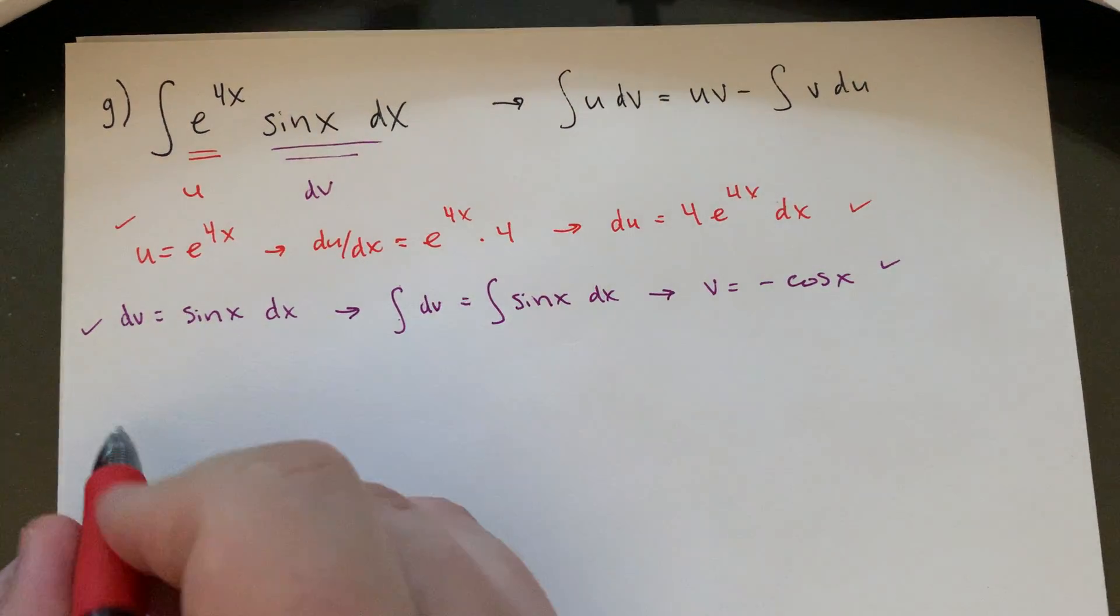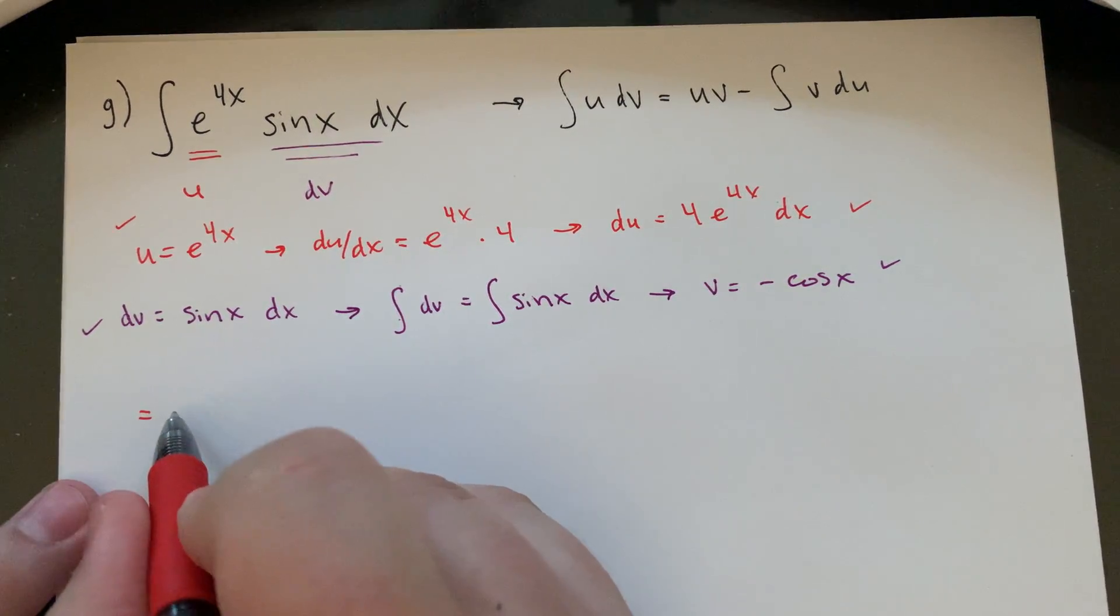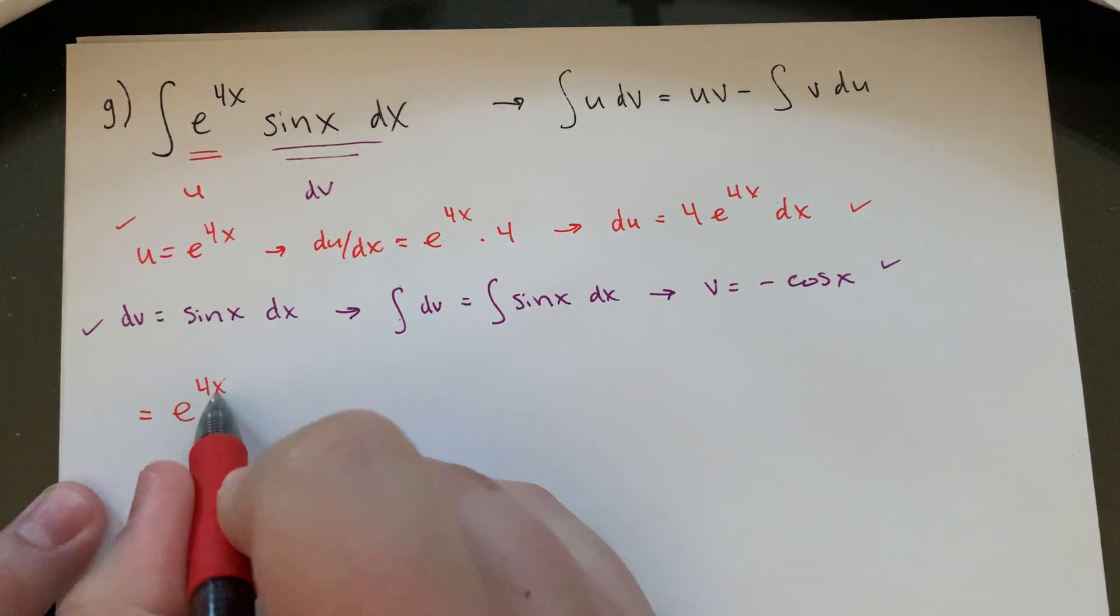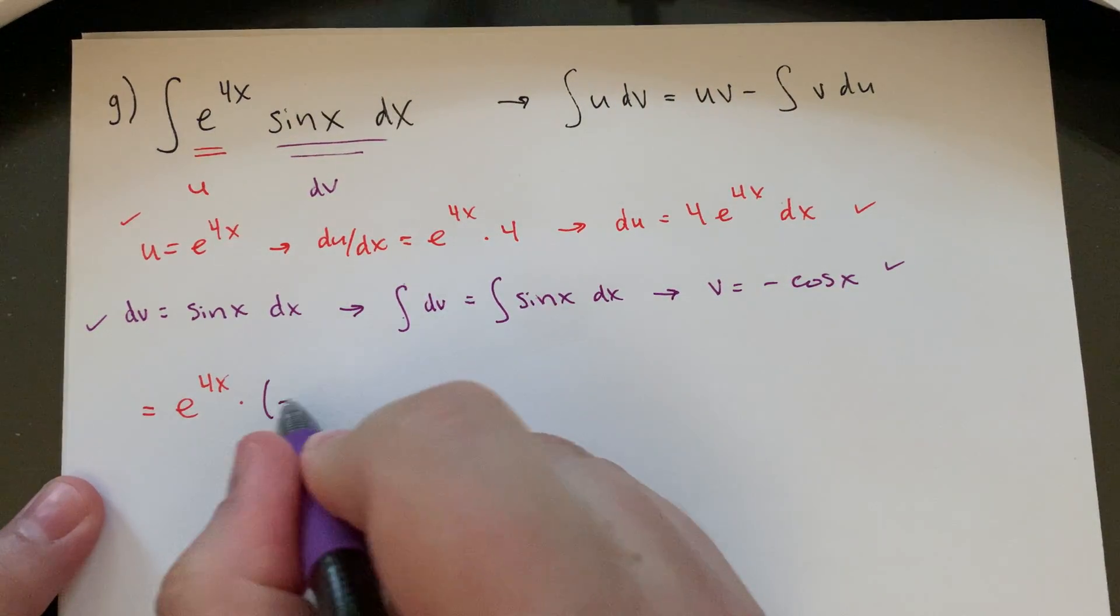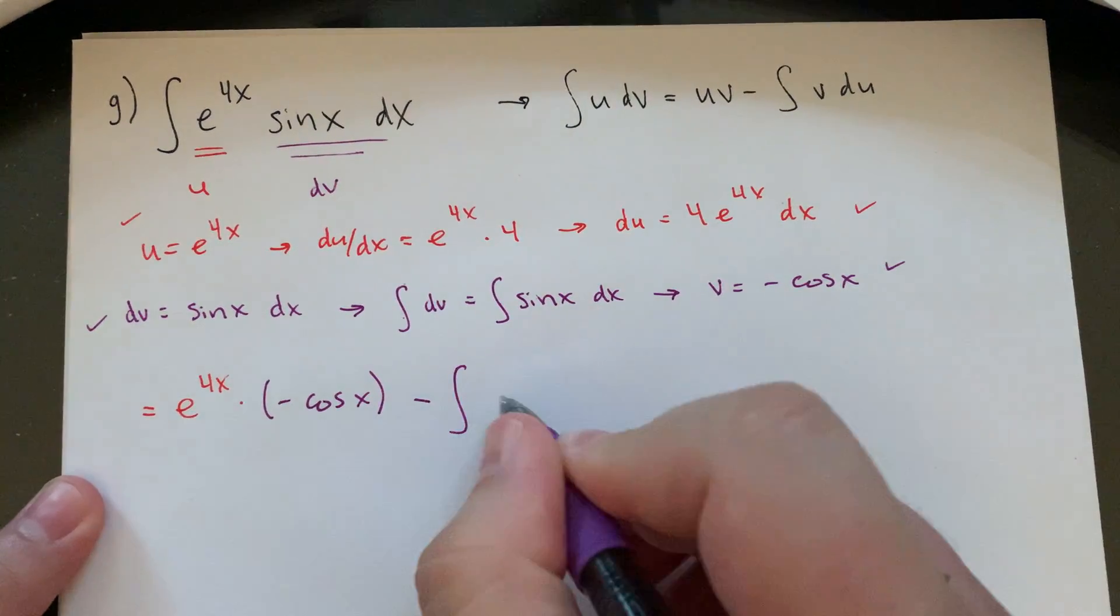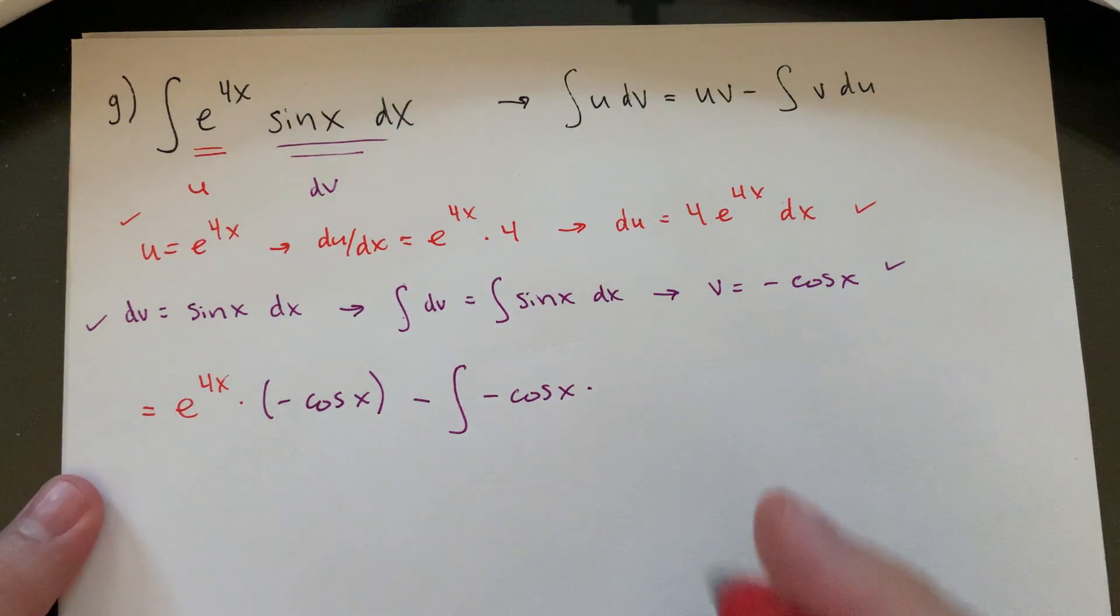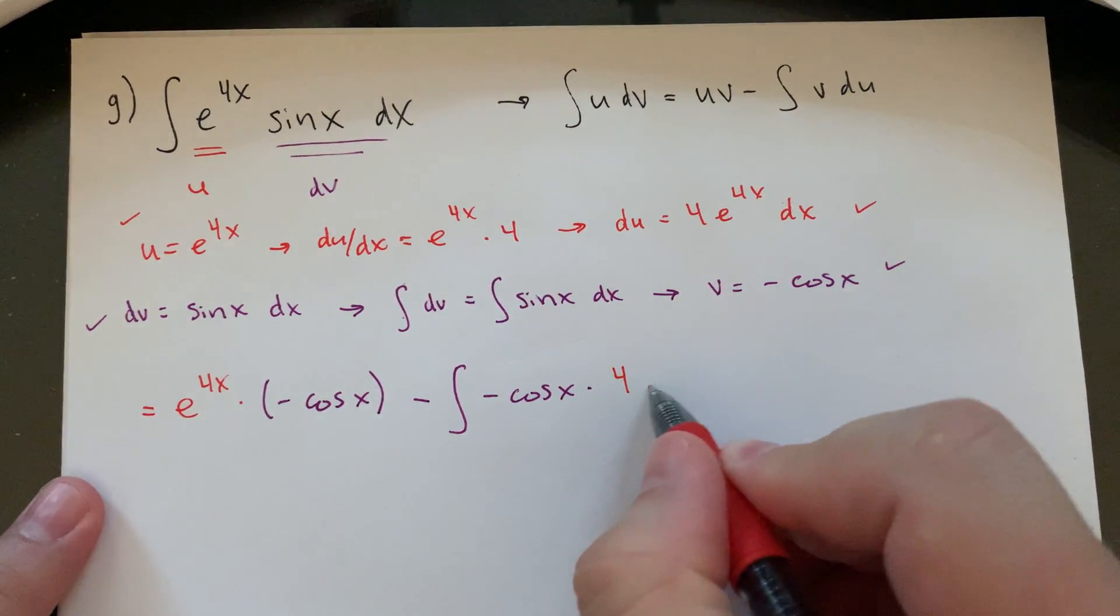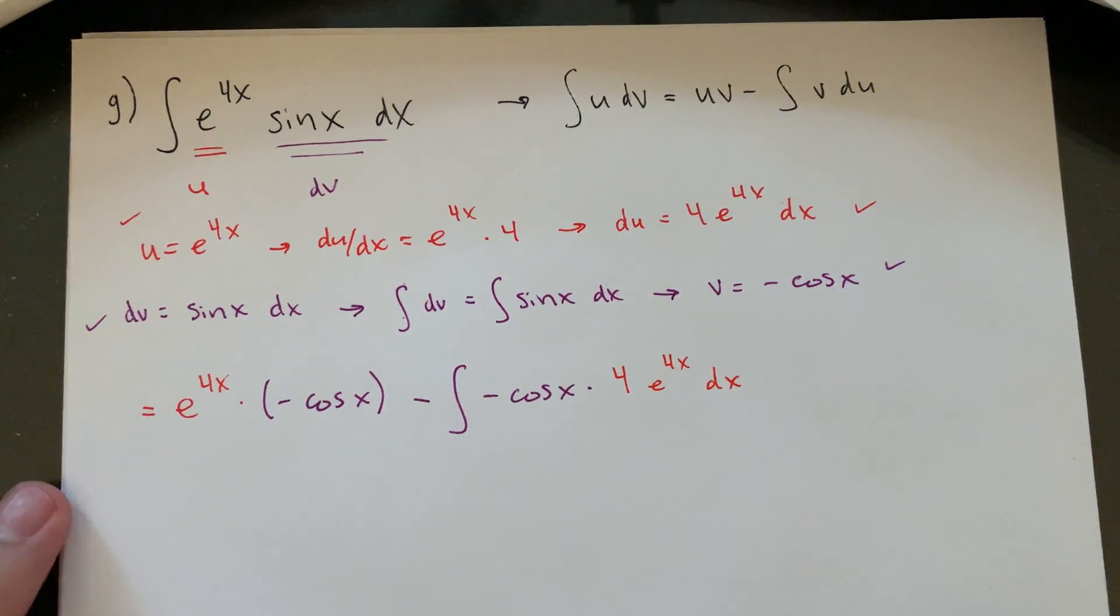In any event, so what do we got? So this is going to equal u times v, so e to the 4x times negative cosine x minus negative cosine x times du, which is 4 e to the 4x dx.